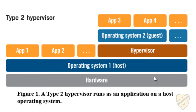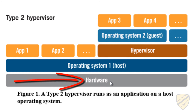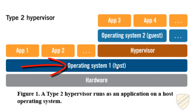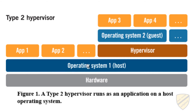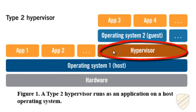The way a type 2 hypervisor works is you would have your hardware — your computer with the motherboard, the RAM, the hard drive, all of that. You would install an operating system, such as Windows, Linux, or Mac OS. That's how you would normally operate your computer. You can also install any programs you like, such as Microsoft Office, Photoshop, or games, and it doesn't affect what we're going to look at with our hypervisor.